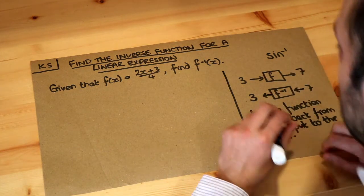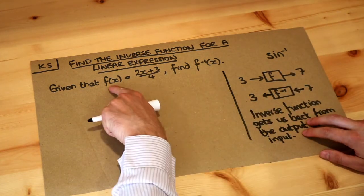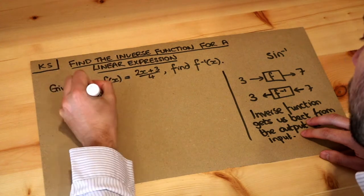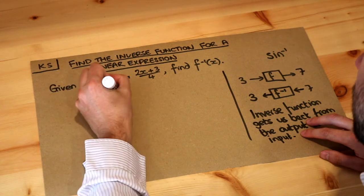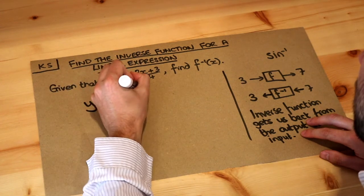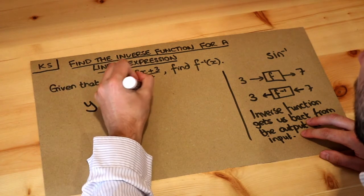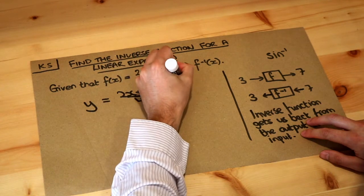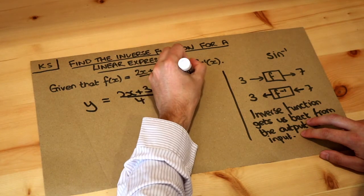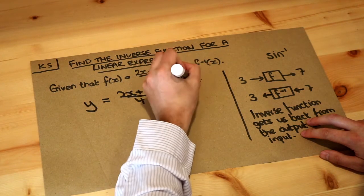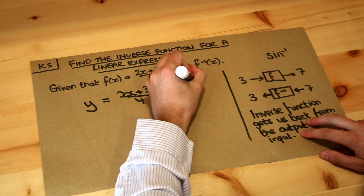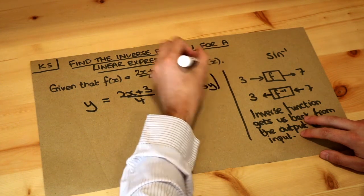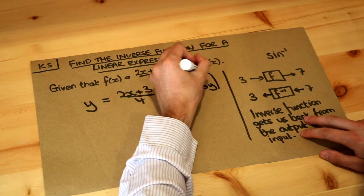The way I do this is to first replace f of x with y, so we just write y equals 2x plus 3 over 4. So step 1: you just replace f of x with y. This is just for convenience, that's all.